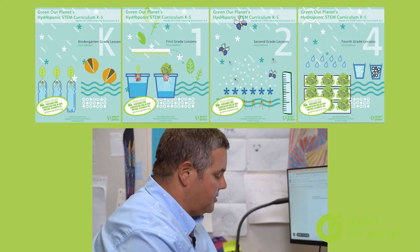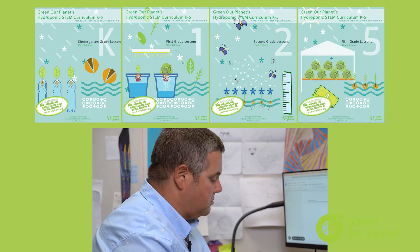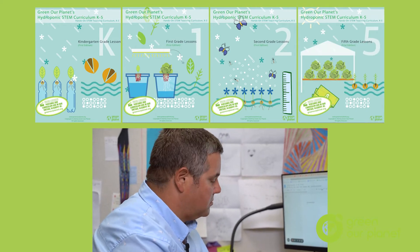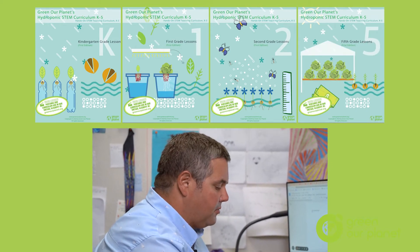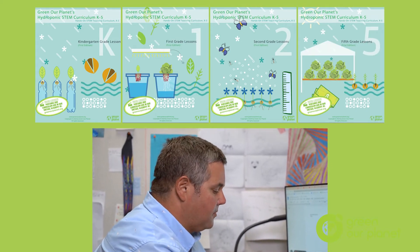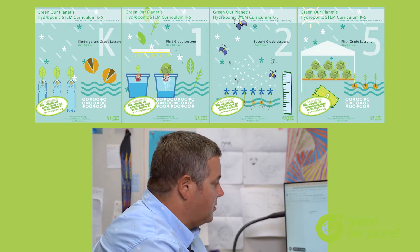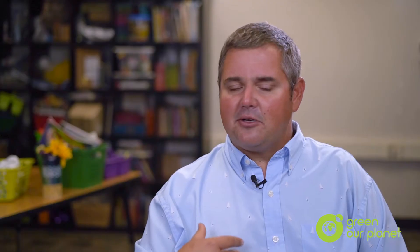Greener Planet has a curriculum by grade. Find something that interests you — the more you're interested in it, the more powerfully you'll teach it. If you love it and believe it, the kids will too. So just pick one lesson, just try one hydroponics lesson, and be amazed — see what the kids say.